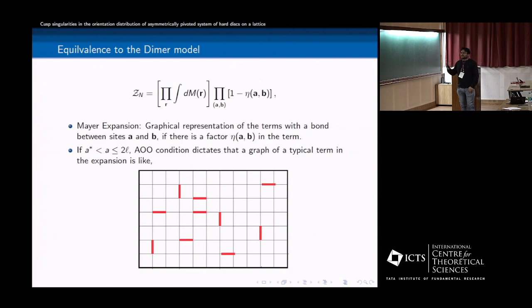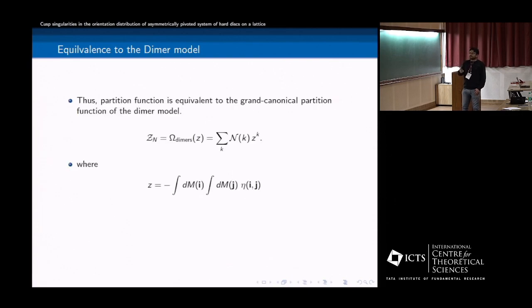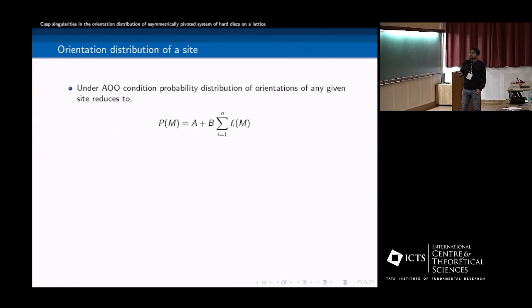For example, now in AO regime, what we have shown is that this model becomes equivalent to dimer model. So this is a typical expansion term of this partition function. And this is nothing but a dimer, because no two bonds can overlap. So this is a typical of the dimer model. So you can exactly write this, this equivalence is exact. And where that is the dimer activity, so this is given by this double integral over eta, the overlap function. And n of k is nothing but the number of ways of placing k non-overlying dimers on the lattice. So all well and good.